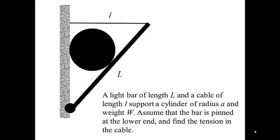In this problem, a heavy cylinder of weight W and radius a is supported by a light bar of length capital L and a cable of length lowercase l. Our task is to find the tension in the cable.